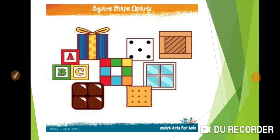Now see in this picture different types of square shaped things. Window, biscuit, blocks, gift box, etc.